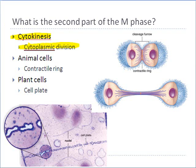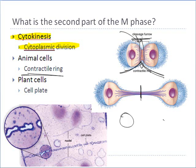In animal cells, cytokinesis occurs when a bunch of fibrous proteins form a ring around right where the metaphase plate was, and they begin to contract or pinch inward. This creates something called a cleavage furrow. The proteins are called a contractile ring — they form a ring around the middle, and by pinching, they create this cleavage furrow and eventually pinch apart the two cells so that they become completely separate from one another.